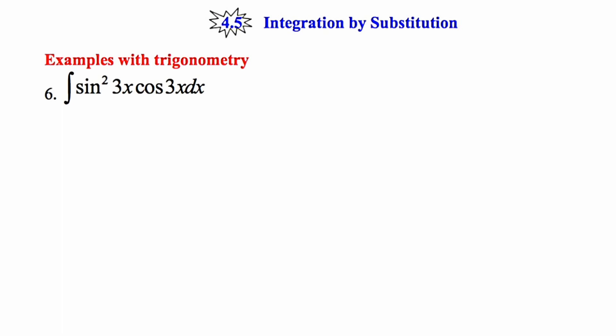Number six. In this problem I'm asked to integrate sin² 3x times the cosine of 3x dx. So generally speaking, I want to allow u to come from the more complicated expression, and hopefully the derivative of that u is somewhere present in the problem.